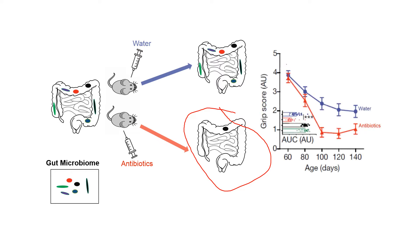After the injection of antibiotics, the investigators compared whether the disease progressed differently between the two groups, and to their surprise, this is exactly what they saw. In this graph, the grip score — a way to measure muscle strength in these animals — shows that the blue line, representing animals receiving just water, had a much slower progression of grip strength loss compared to the animals which received antibiotics. This suggests that when the gut microbiome is completely removed, the animals progress much quicker, indicating that gut bacteria have some kind of protective effect slowing the disease down.